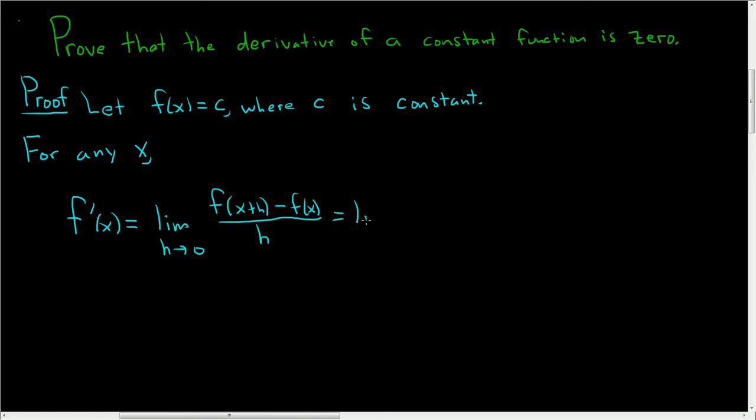Well this is the limit as h approaches zero. f of x plus h is just c, because f of x is equal to c. So if you plug in 2 you get c, if you plug in 7 you get c, if you plug in blah you get c, as long as blah is a real number. So if you plug in x plus h you're going to get c. So here we get c and then f of x is just c. So c minus c and it's all being divided by h.